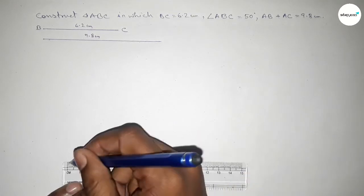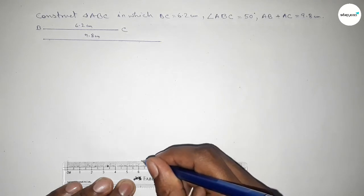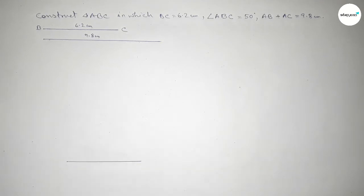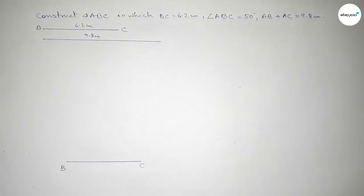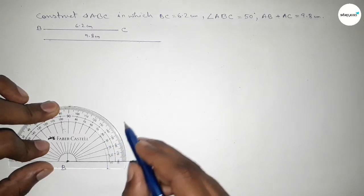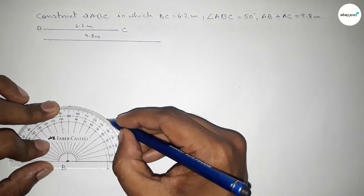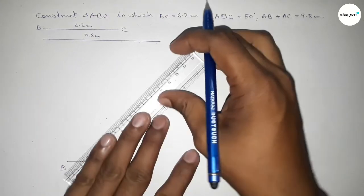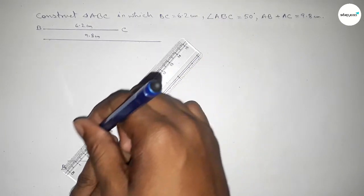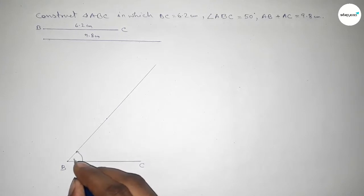Again we have to draw a line of length 6.2 centimeters. Taking point B here and point C here. Now we have to draw a 50 degree angle at point B, so putting the protractor on point B and counting the angle — this is the 50 degree angle at point B.